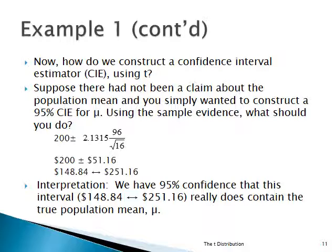We have a 95% confidence interval that goes from $148.84 all the way to $251.16. We're 95% sure that somewhere in that range is the true population mean. Notice that $260 is not in there. Claims of more than $251.16 would not be reasonable. So if somebody wants to claim $260 or $270, the highest you're willing to go is $251.16.